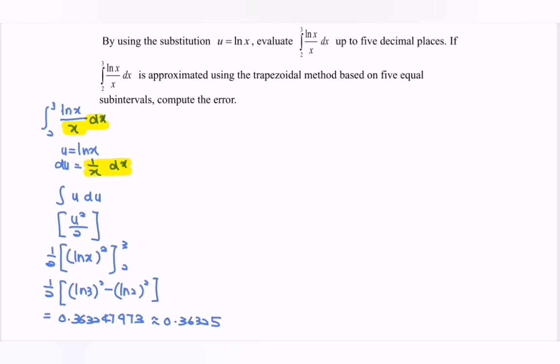Next, second part. Approximate using the trapezoidal method. Number 1, we are going to find h. Notice that here we have n equals 5, so h equals (3 minus 2) over 5, where h equals 0.2.